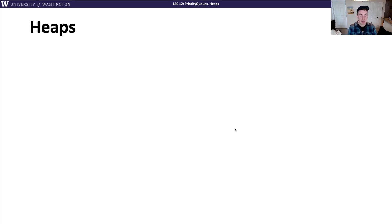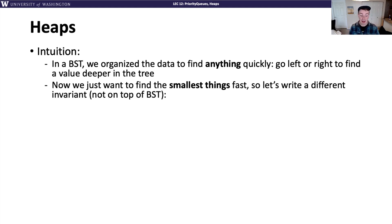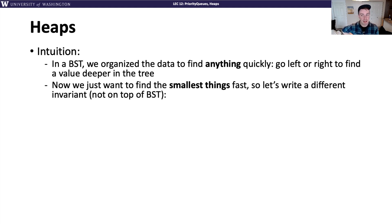The new structure we're introducing is called a heap — a special type of tree with a slightly different set of invariants. In a binary search tree, we organized data so we could find any value quickly. But for a priority queue, we really want fast access to the smallest element so we can quickly peek at it or remove it. So we're going to change up our invariant to structure data in this more useful way.